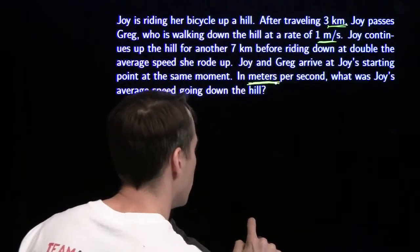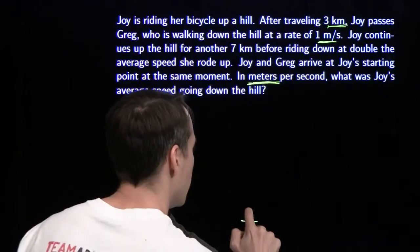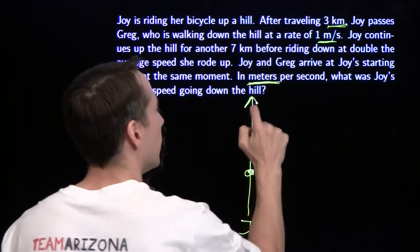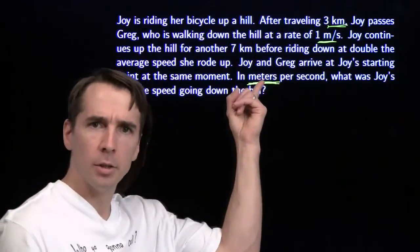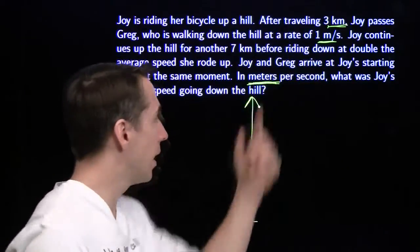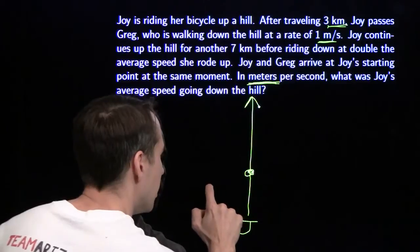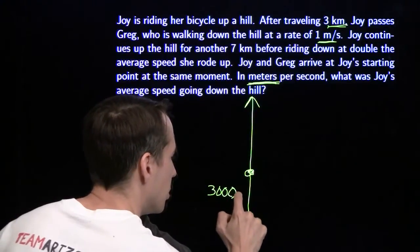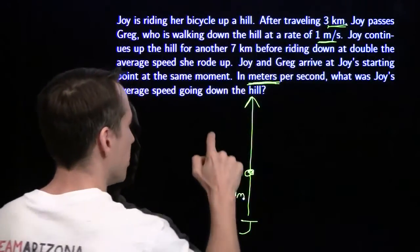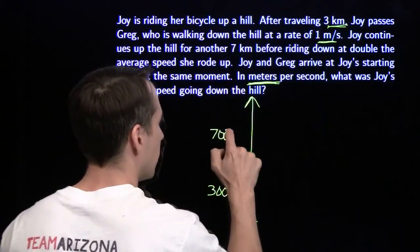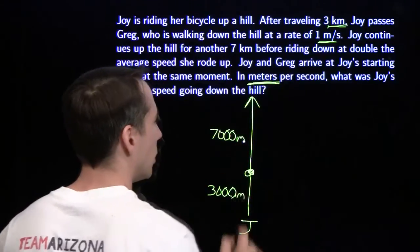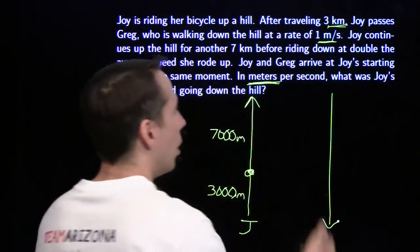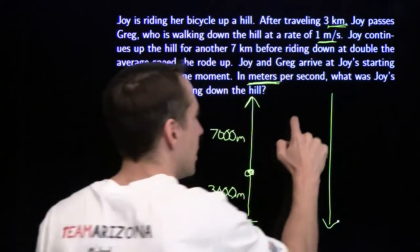So we're going to start with Joy going up the hill. She goes up the hill, meets Greg somewhere, then keeps on going. I'm going to do everything in meters because I want meters per second at the end. So this first portion is 3,000 meters. Then she meets Greg, and then she goes another 7,000 meters. Then she goes down the whole hill — all in one go — that's a whole 10,000 meters.